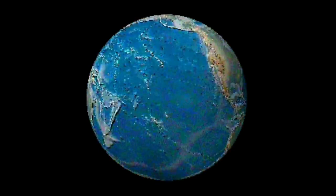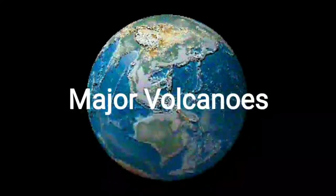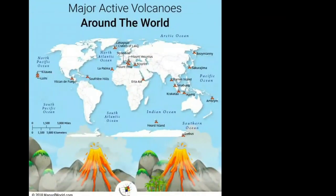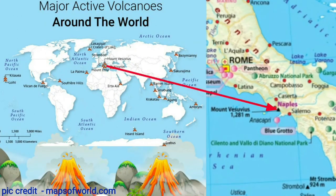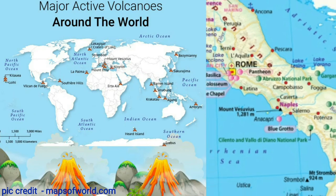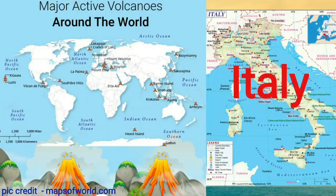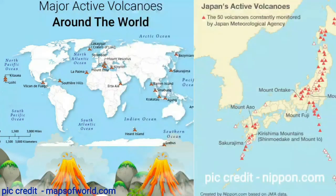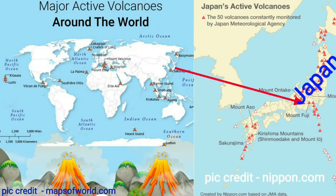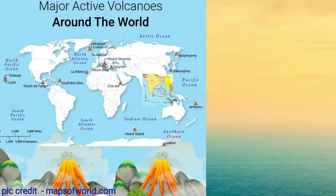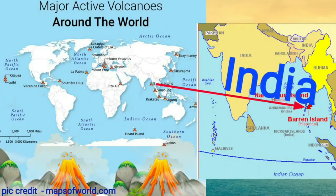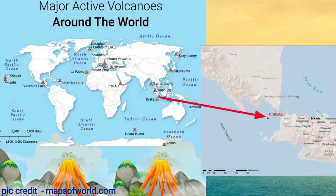Let us now look at some of the major volcanoes on the world map. Mount Etna and Mount Vesuvius are in Italy. Fujiyama is in Japan. Mount Popa is in Myanmar. Barren Island is in India. And Mount Krakatoa is in Indonesia.